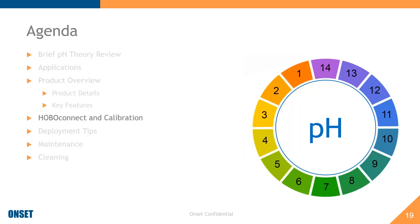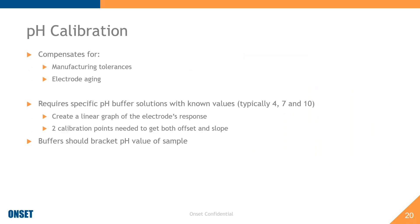Getting into Hobo Connect, our new mobile app for iOS and Android, and calibration. An important part of deployment and getting good results is proper calibration. The reason to calibrate is to compensate for manufacturing tolerances, electrode aging, electrode conditioning, and cleaning. When calibrating, you'll use a minimum of two pH buffer solutions with known values, used to create a linear graph of the electrode's response, producing two correction factors: the offset and the slope.